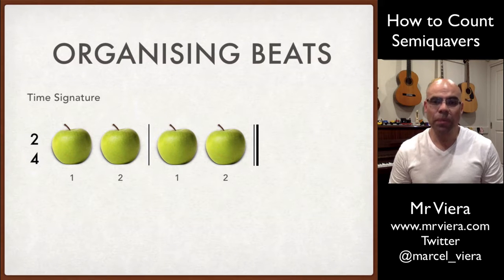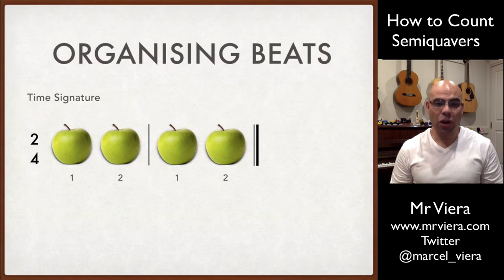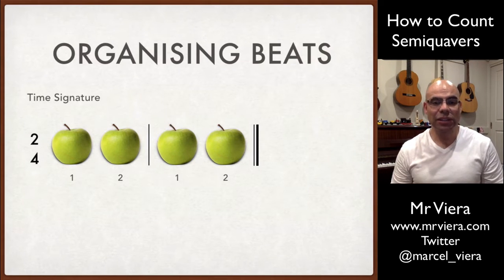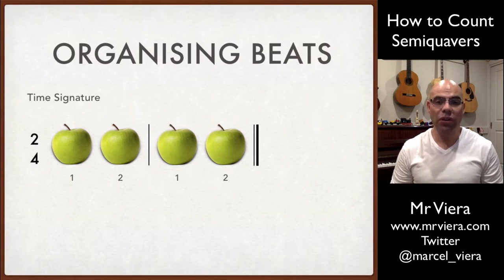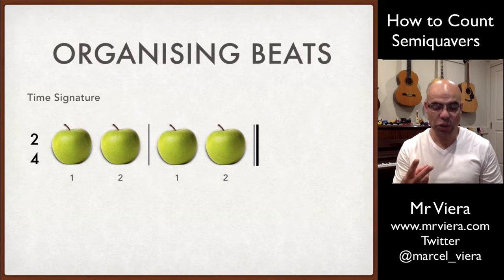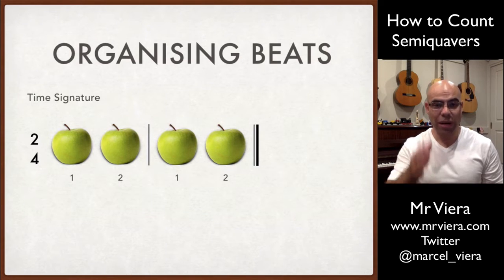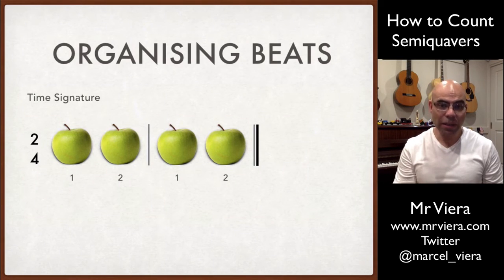In this example we have a time signature which is the two with a four underneath it, and that time signature tells a musician, 'Hey, I'm organizing music into groups of two,' or two apples. At the end of every group of two we use a single straight bar line to separate the groups of two.